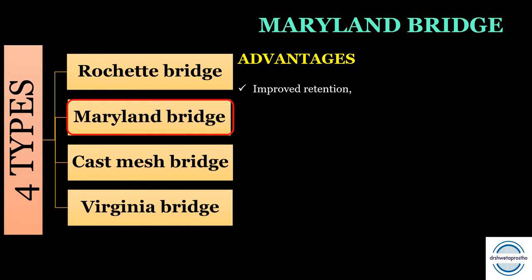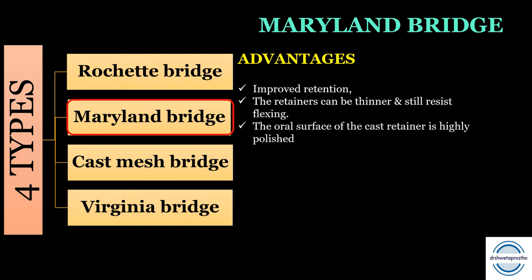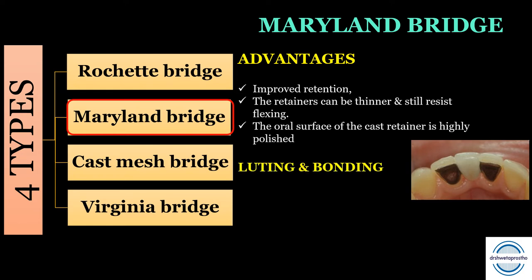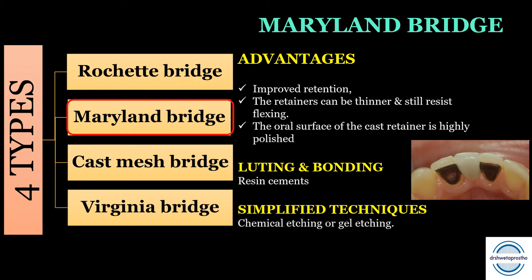Advantages of Maryland bridges due to electrolytic etching: improved retention; retainers can be thin yet still resist flexing; no perforations to weaken the metal structure; the oral surface of the cast retainer is highly polished; no wear of the resin; and no plaque accumulation as occurred with Rochette bridges. Luting and bonding are done with dual-cure resin cements. Simplified gel etching methods have also been introduced. The Maryland bridge comes as a separate short note in theory exams.